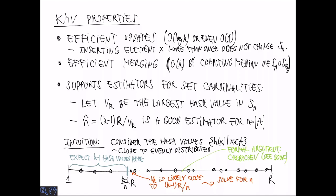The formal argument uses Chebyshev's inequality twice to bound the probability that there are unusually few or unusually many small values among the hash values. It can be shown that if we choose K to be O of 1 over epsilon squared, then we get a relative error of 1 plus minus epsilon with constant probability.